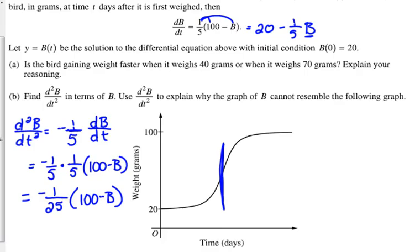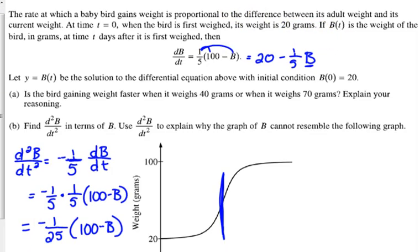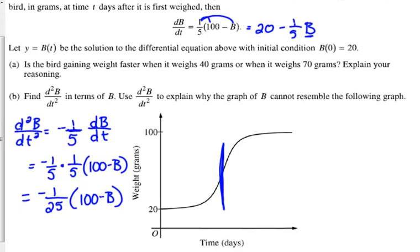Let's see here. The weight. B is representing the weight of the bird, right? B of T is the weight of the bird. It was first 20 grams, and then it grows from there. I'm trying to make sense of this.